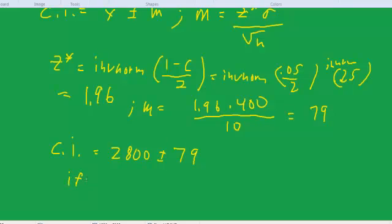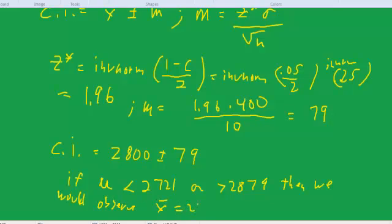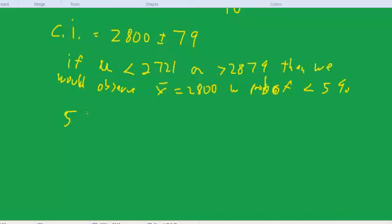again, if the true mean calories eaten per day by a 15-year-old were outside this interval, that is, less than 2721 or greater than 2879, then we would observe x-bar equals 2,800 with a probability of less than 5%.